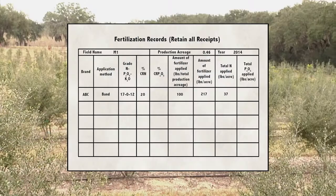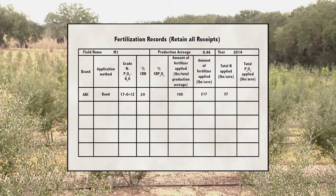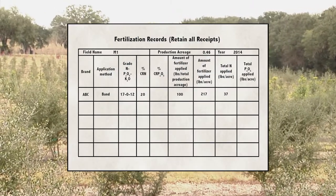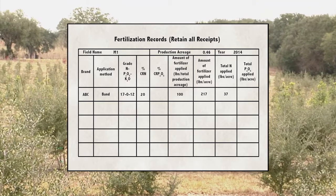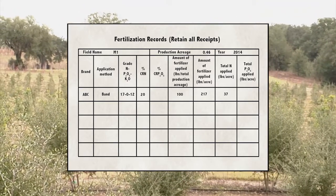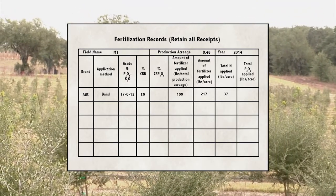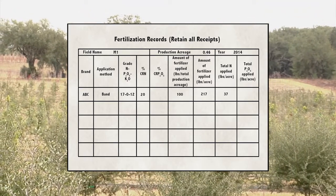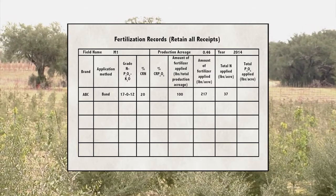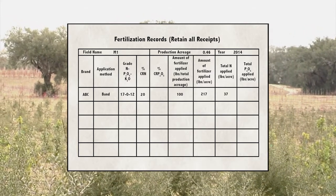Fertilization records provide a history of fertilization in the nursery. Records not only document nitrogen and phosphorus application amounts, but also are useful in overall fertilizer management, including the troubleshooting of fertilizer-related plant growth problems.